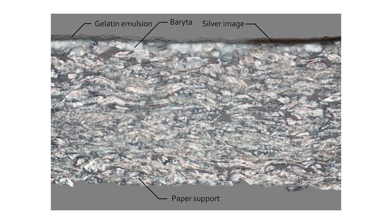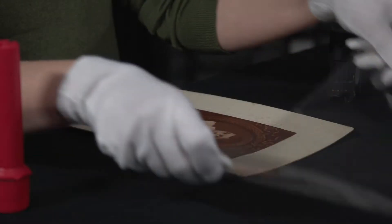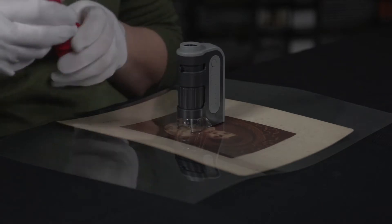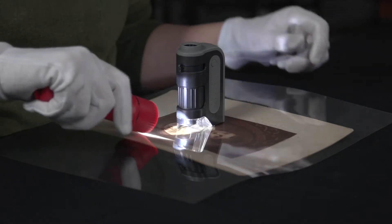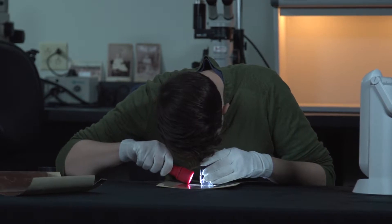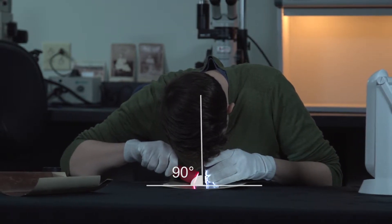Determining the layer structure of prints with a paper support requires 30x to 50x magnification and raking light. Using a pocket microscope or a stereo microscope, angle your light source so that it is raking across the surface of the print at a 90-degree angle. First, determine whether or not the paper fibers are visible. If they are obscured, the print likely has three or more layers. If the paper fibers are visible, determine where the image is in relationship to the paper fibers.